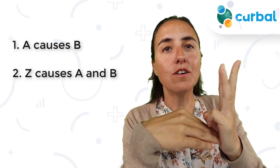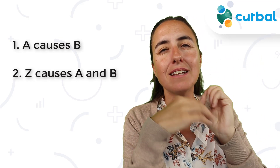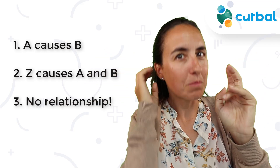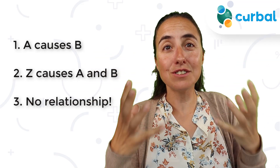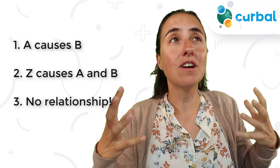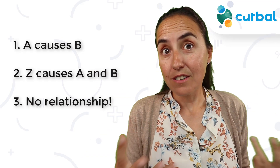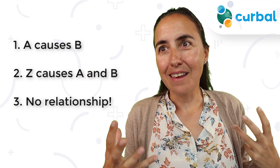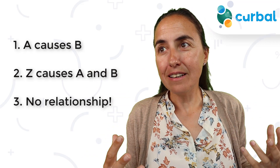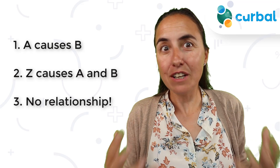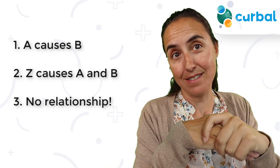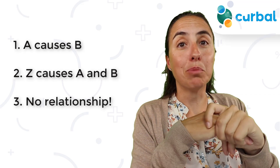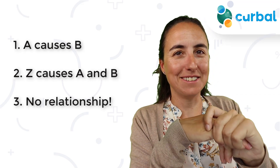And the third possibility is that there is no relationship whatsoever in real life. The only reason why those two are correlated is by chance. These are called spurious correlations.